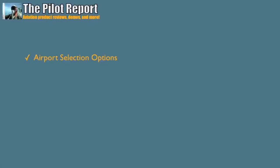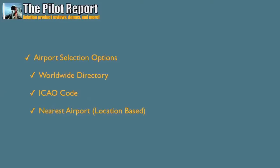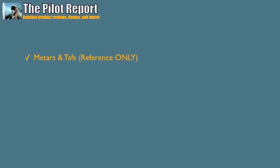The AeroWeather application gives you weather for various airports you select. Your airport selection options are from a worldwide airport directory by entering in the ICAO code, or you can use the nearest airport option which is location-based according to your phone's GPS chip. It gives you METARs and TAFs, which I must tell you is reference only — meaning this weather application is not an approved FAA weather source.